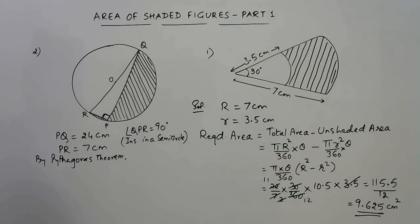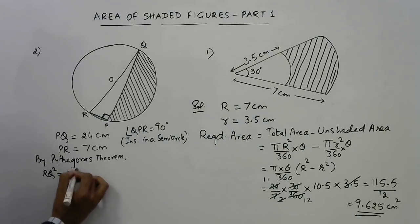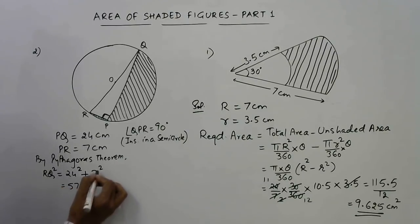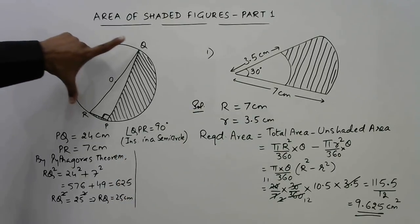By Pythagoras theorem, RQ² will be equal to 24² + 7². If you know, the square of 24 is 576 and square of 7 is 49. If you add the two it will become 625. So actually RQ² is 25², and square gets cancelled, giving us RQ as 25 centimeters.